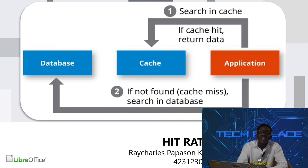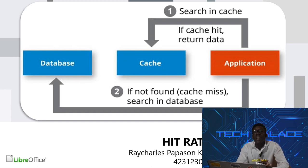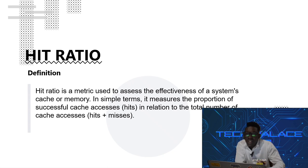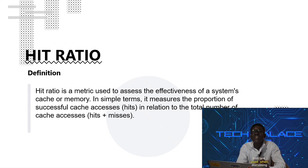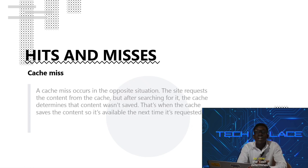Welcome to this section on understanding hit ratio and its importance. Hit ratio is a metric used to assess the effectiveness of a computer system's cache or memory. In other terms, hit ratio measures the number of successful cache hits versus cache misses in a computer system. A cache hit is a situation where the computer requests data that has been stored in the cache — the cache finds the data and retrieves it.